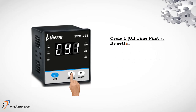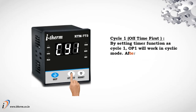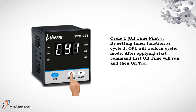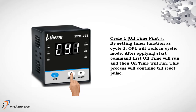Cycle 1, off time first. By setting timer function as cycle 1, output 1 will work in cyclic mode. After applying start command, first off time will run and then on time will run. This process will continue till reset pulse.